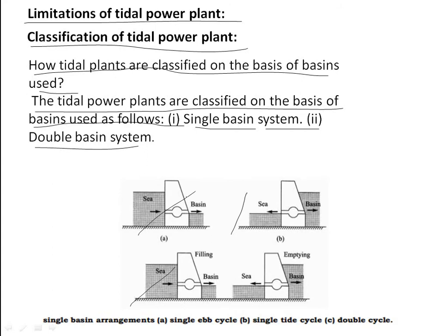The single basin system is the simplest system to generate tidal power. It has only one basin to store water. The basin is separated from the ocean or sea by a dam, and the turbines and generators are mounted within ducts inside the dam. The single basin system is further classified into the single ebb cycle system (figure A) and the single tidal cycle system (figure B).